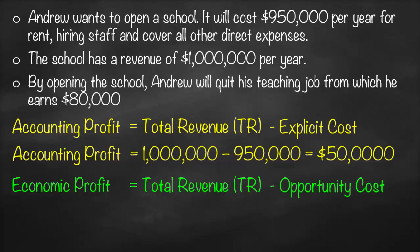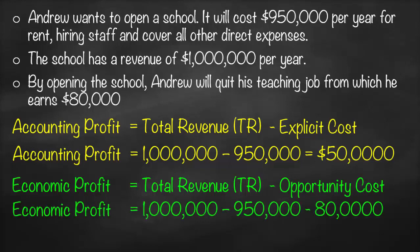Economic profit is total revenue minus opportunity cost, which equals explicit cost plus implicit cost. So: $1,000,000 minus $950,000 (explicit cost) minus $80,000 (implicit cost) gives us an economic profit of negative $30,000. As you can see, economic profit will always be lower than accounting profit.